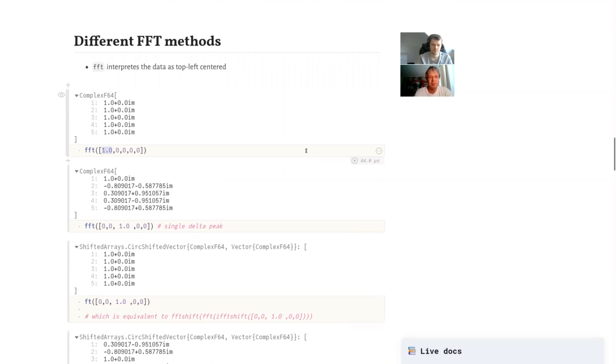However, if we then put it in the middle, as you see, the FFTW routine does not give you anymore a real constant one array, but it gives you a complex factor. That's because the original delta function that we transform is not at the zero coordinate.